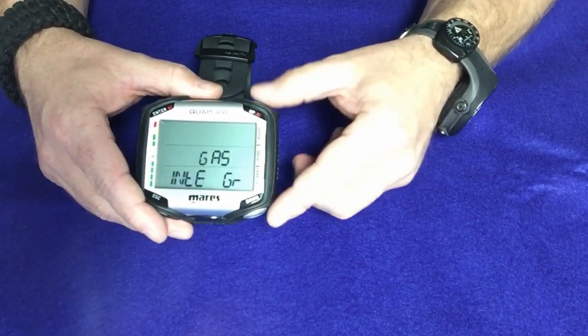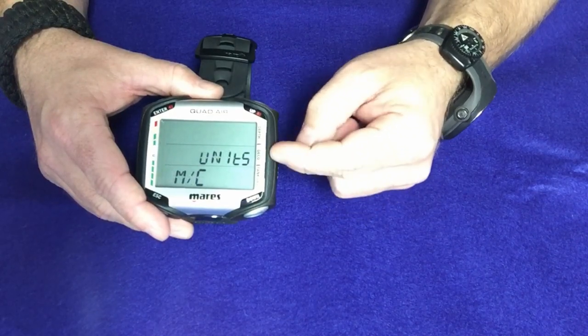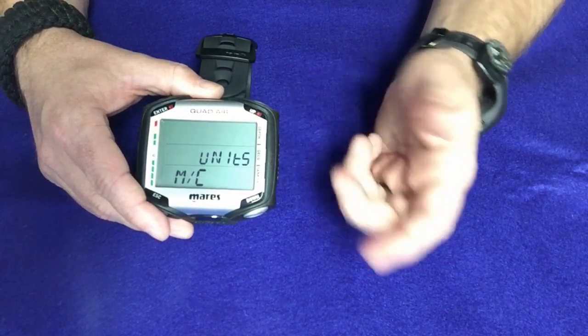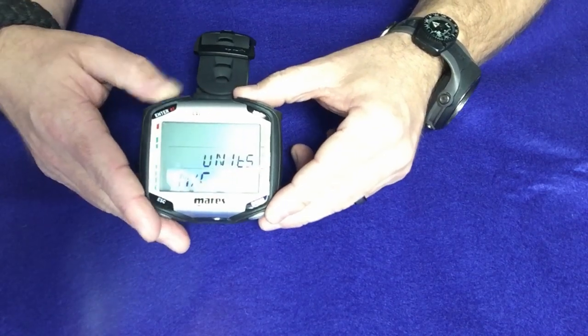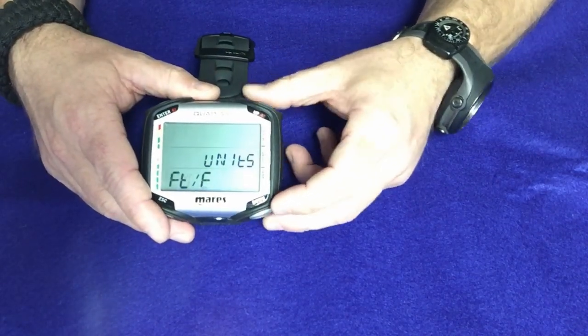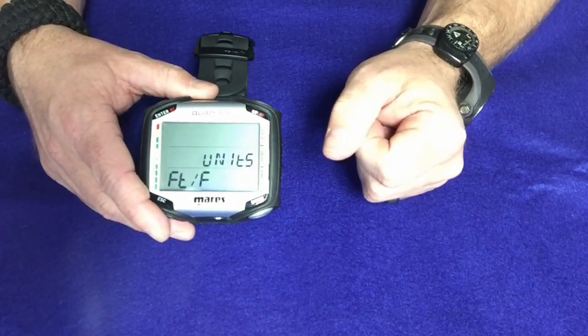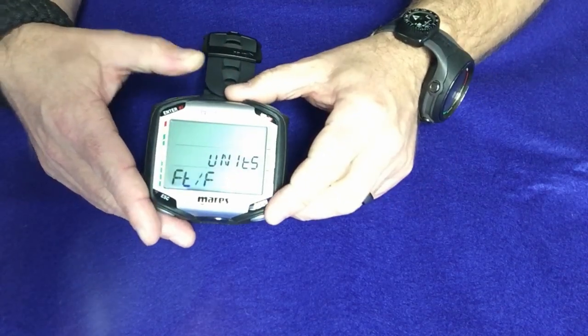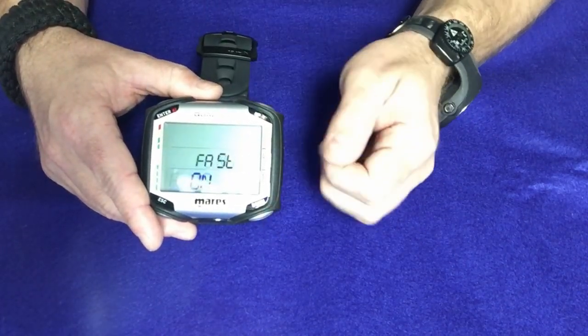Moving on, after air integration, of course it's going to go into units. Now this is currently set up in metric. If you want to set it into imperial, you just simply hit the enter button, and then of course you can change the units over to imperial very easily. Hit the enter button to confirm once again.